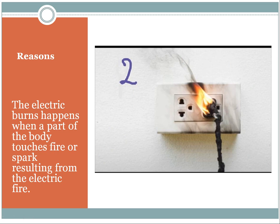Reason number two: an electric burn occurs when a part of the body touches a fire or spark. We know how an electric fire occurs. So if a person has an electric fire at home and is trying to deal with it or put it out, the spark of this fire is going to harm that person, resulting in an electric burn. The second reason says the electric burn happens when a part of the body touches a fire or spark resulting from an electric fire.